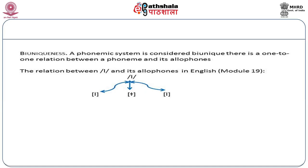As you notice here, the phoneme /l/ is related to three allophones: /l/, /ɫ/, and /l̪/. Looking at these three allophones, you know that each one of them is an allophone of the phoneme /l/. And similarly, looking at the phoneme, you know that it has three allophones. This is what was meant by bi-uniqueness.